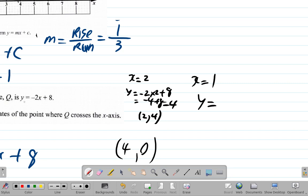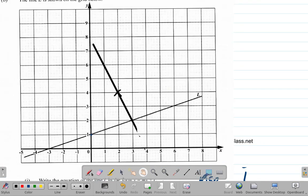If we had used a different point and say what happens when x is 1, y would equal -2 times 1 plus 8, which is -2 plus 8, which is 6. So we would have (1, 6) as a point on the line.